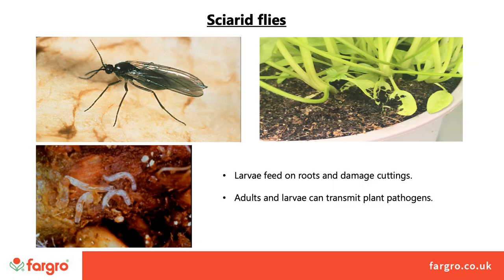In the top left-hand photo we can see the adult sciarid fly, which is often seen flitting around and caught in high numbers on yellow sticky traps. In the bottom left-hand photo the larva is present with its distinctive black head and is up to about 10 millimetres in length. Larvae feed on roots and cuttings, even going up inside cuttings of forsythia and poinsettia, for example.